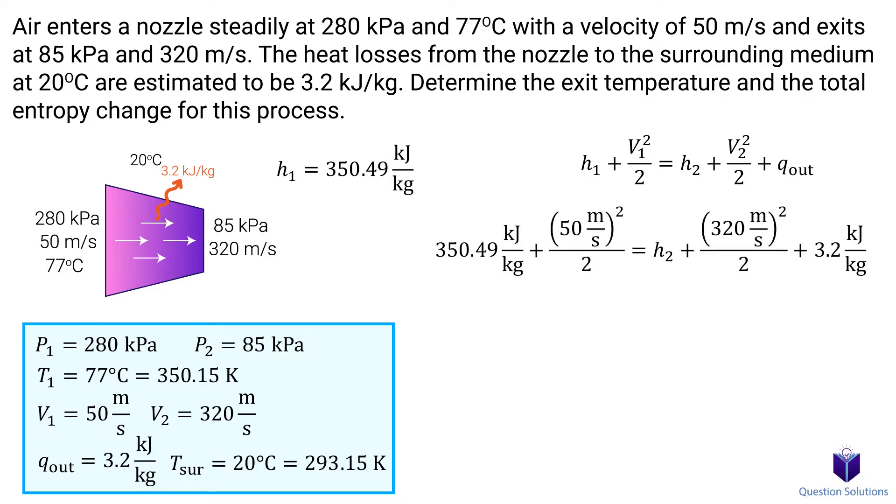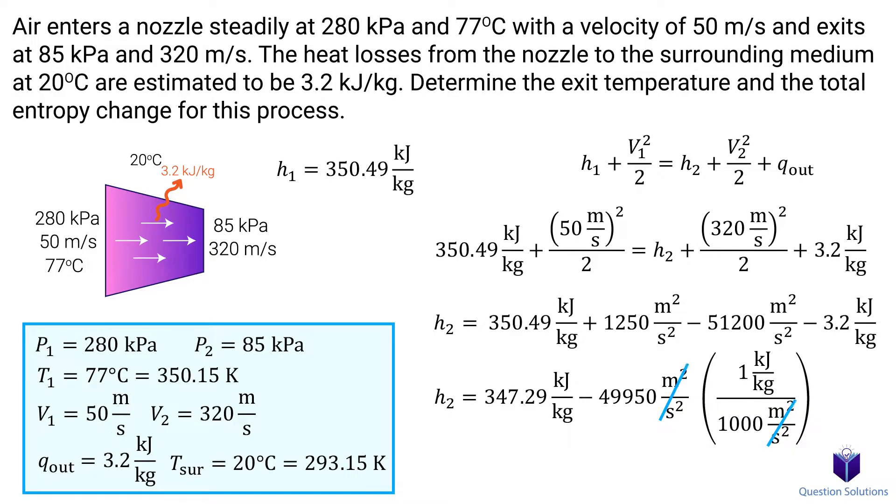Let's plug all of these values into our equation. And we can solve for the final enthalpy. Let's go through the motions. And when we get to this step, we need a unity conversion ratio to get rid of the meter squared over second squared.